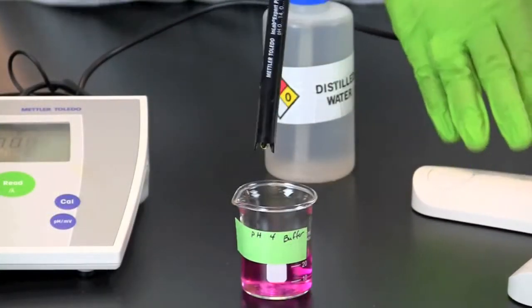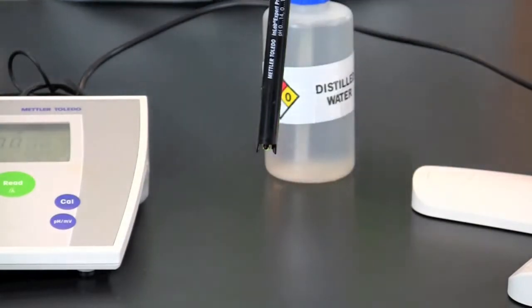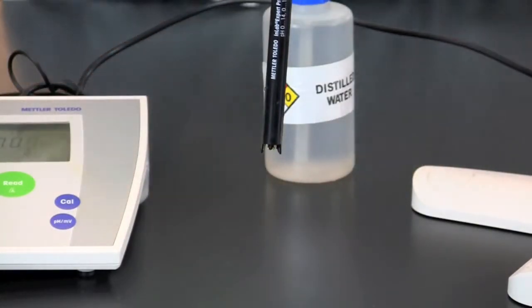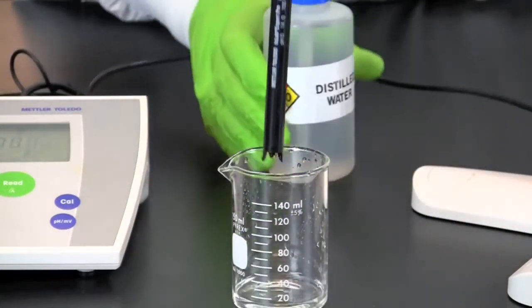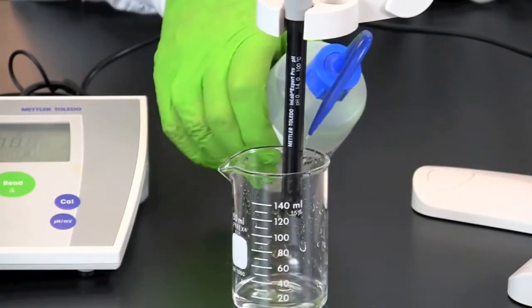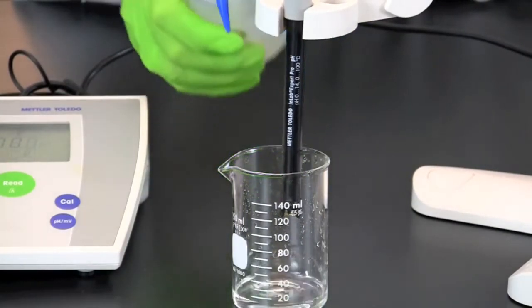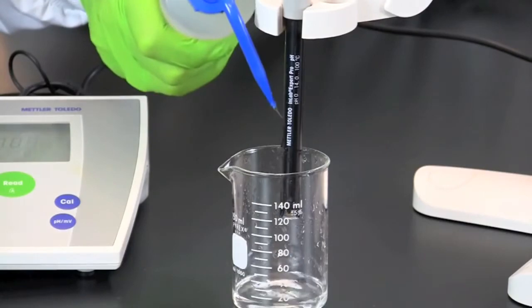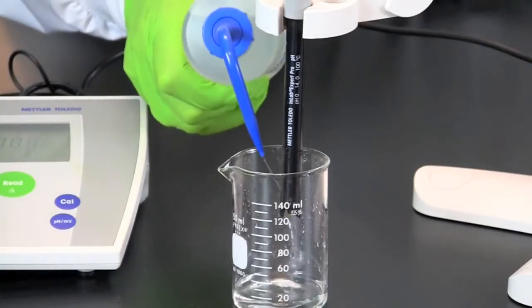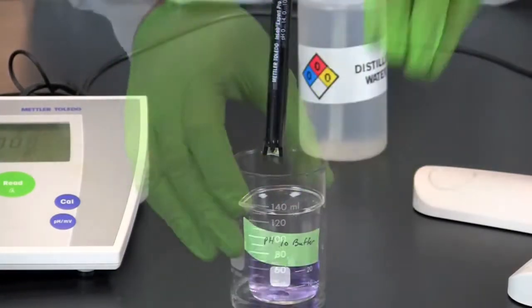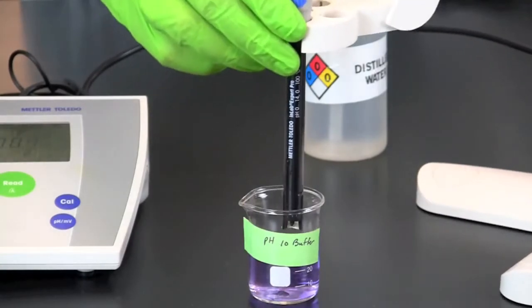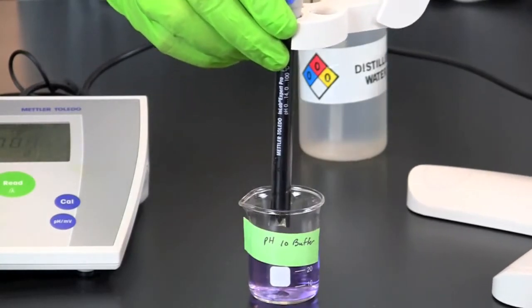Once the standard has been calibrated, you will need to remove the sample and again rinse the electrode with distilled water. You will then calibrate the final standard with a pH of 10.